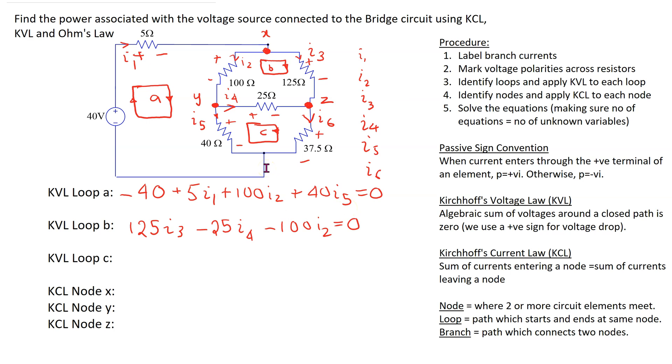Repeating the process for loop C, starting here we have 25 I4, and plus to minus another voltage drop, so plus 35.6 I6. Going from minus to plus is a voltage rise, so minus 40 I5. Thus, applying Kirchhoff voltage law to the three loops, we have obtained three equations. We still need three more equations.